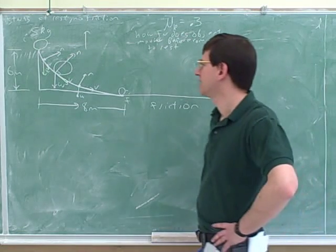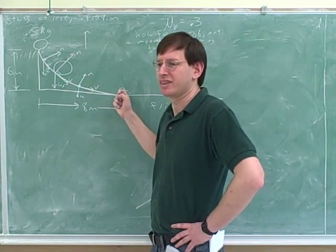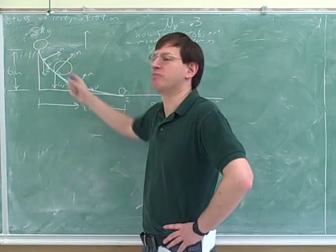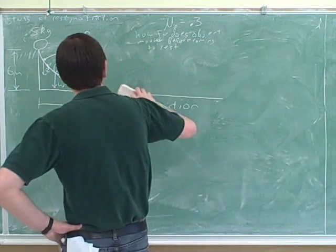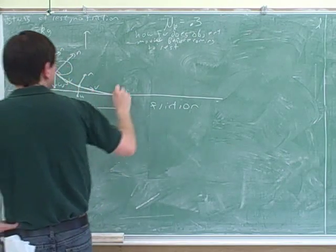Actually, I just realized something I shouldn't have done in this problem. I made this object a ball, but if the object is a ball it would be rolling. And rolling motion is actually more complicated than just sliding, so let's think it's a box instead.